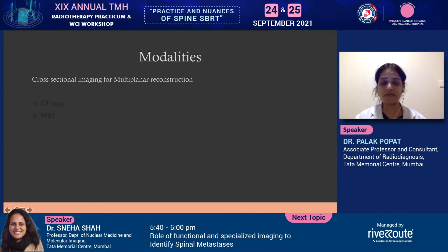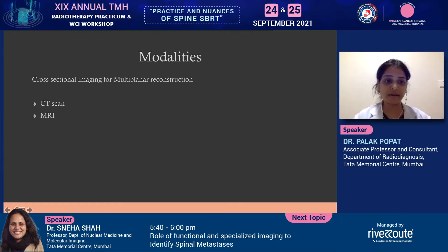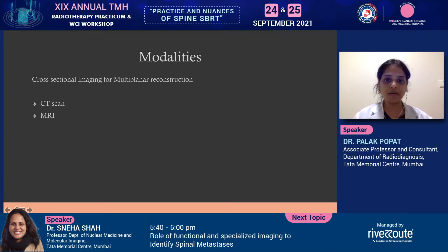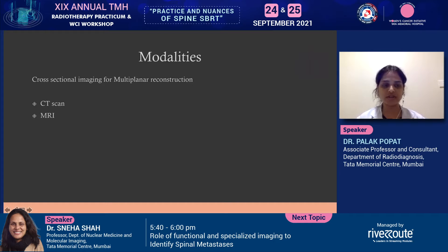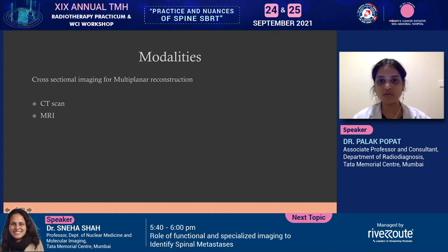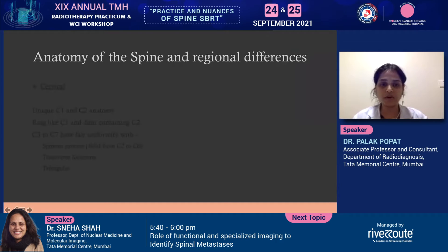The modalities available, especially for reformation in multi-planes, would be CT scan and MRI, based on your preference for the lesion and the infrastructure of the institute. When we talk of multi-plane reconstruction, there are many software tools available, such as curved reconstructions, which can actually help you straighten out a scoliotic spine. It is good to use all the software tools available on your system.